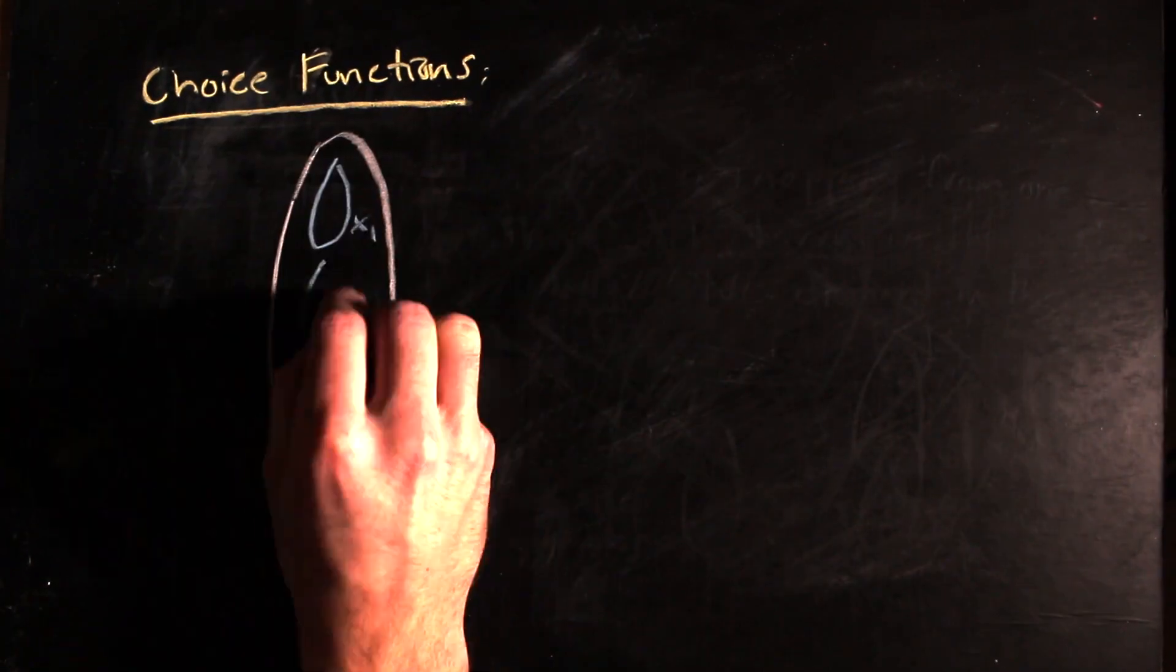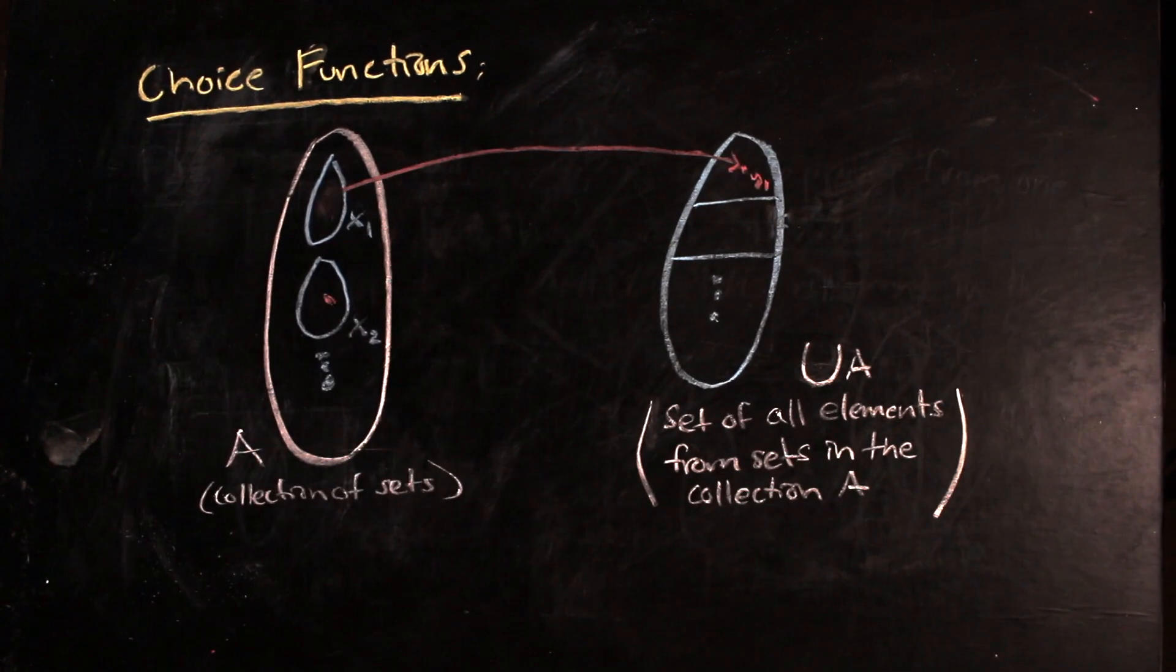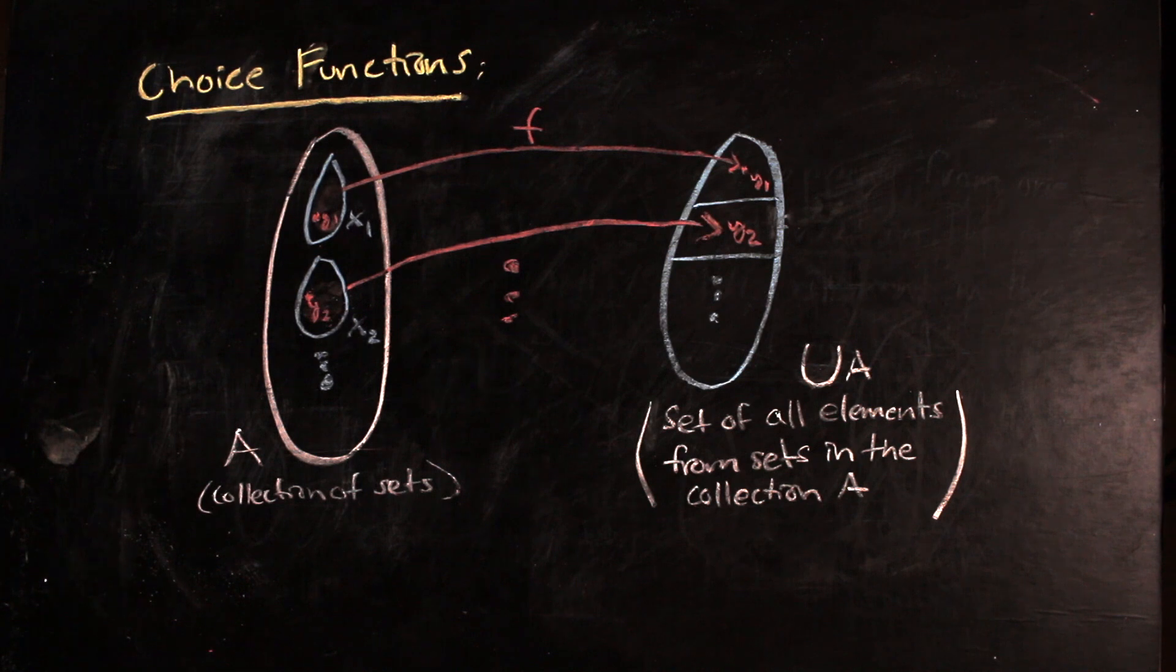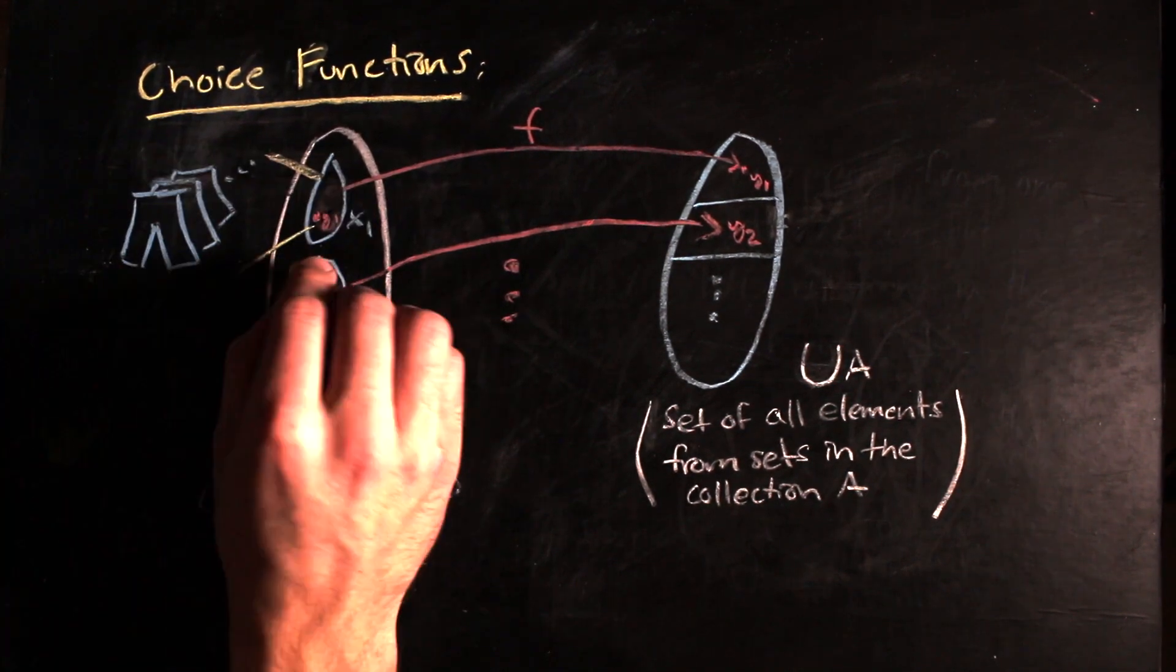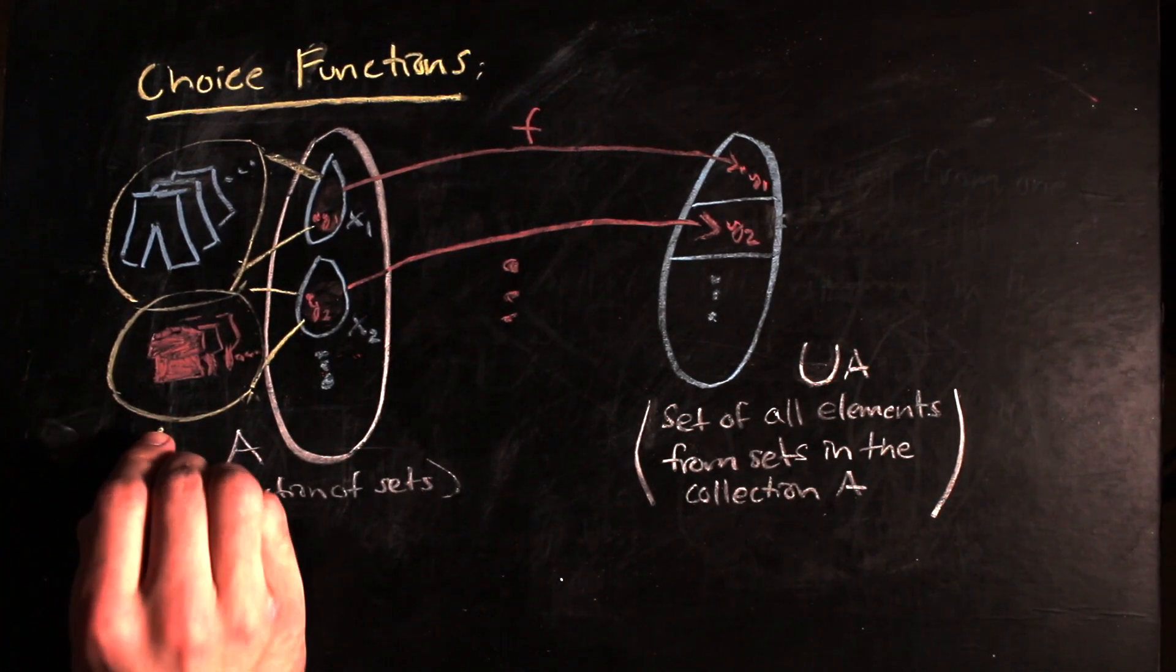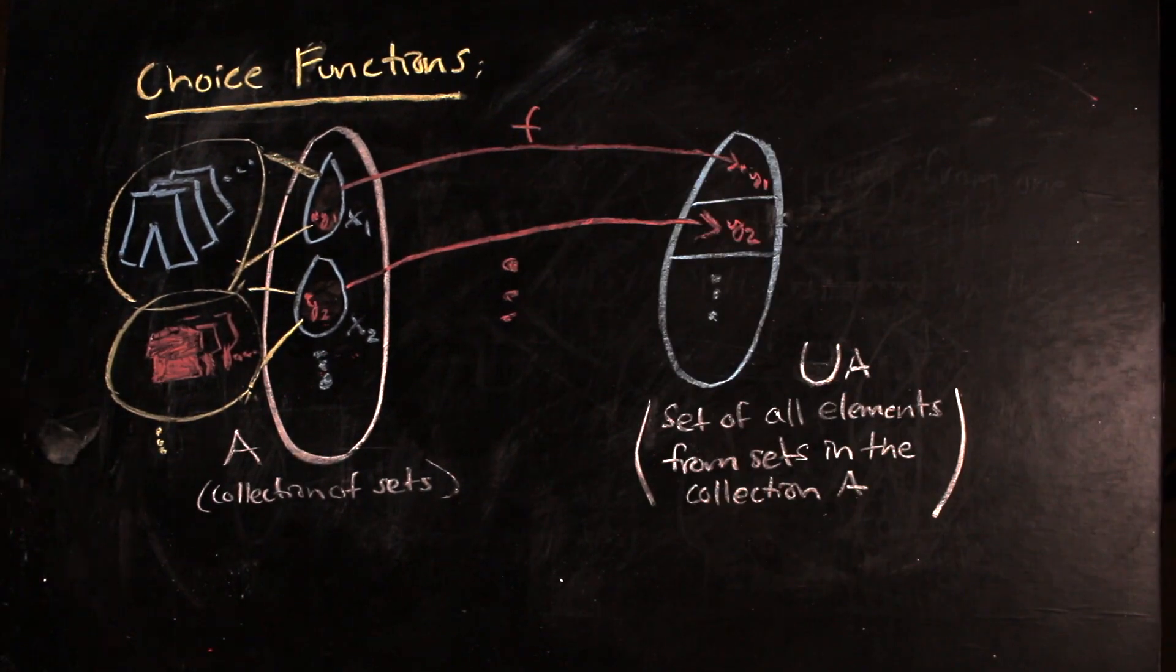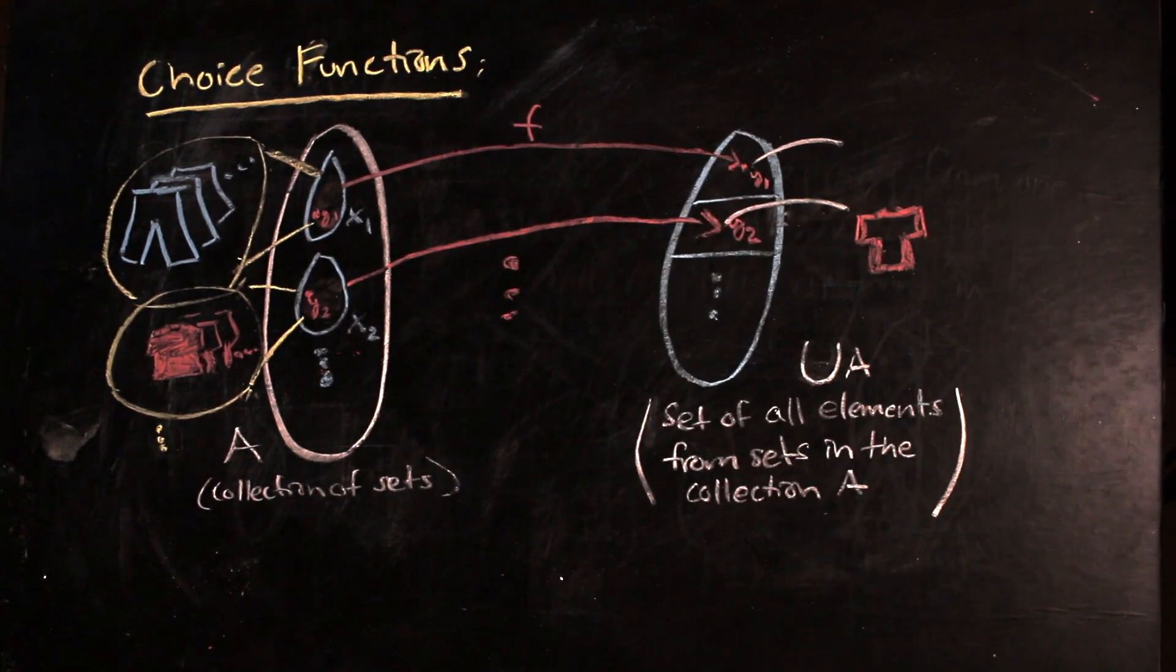Now, a choice function is a function that operates on a collection of non-empty sets, where the function applied to any set gives an element in that set. Choice functions match our intuition behind choice. Given the set of pants, the set of shirts, and the set of shoes, and so forth, choosing what to wear for the day is the same as taking each of those sets and using a function to send it to one of its elements.